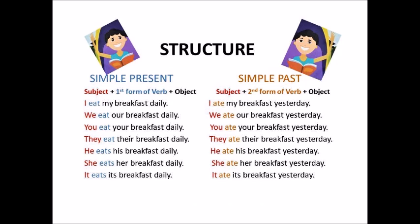In present tense, I, we, you, they eat the breakfast daily. And with third person singular — he, she, it — eats the breakfast daily.